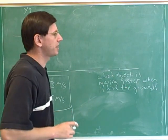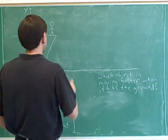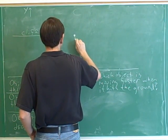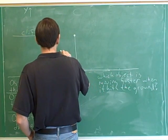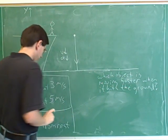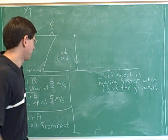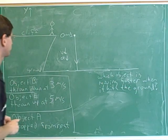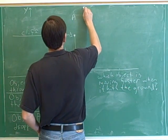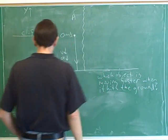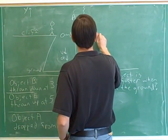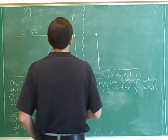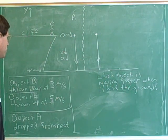Let's start with the path for object A. I hope that you tried to work that out by drawing paths. For object A, the path looks like this. Object A at this height was going 0 meters per second. Now object B is also just going down — object B is thrown down, so it just goes down.